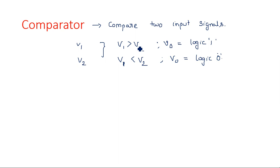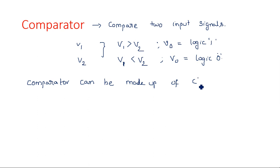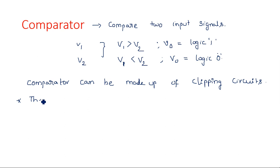The purpose of a comparator is to compare the two input signals. A comparator can also be made up of clipping circuits. The basic difference between the comparator and clipper is that the purpose of a clipper is to eliminate or clip a part of the signal, whereas the comparator's purpose is to compare two input signals. That is the key distinction between the comparator and the clipper.